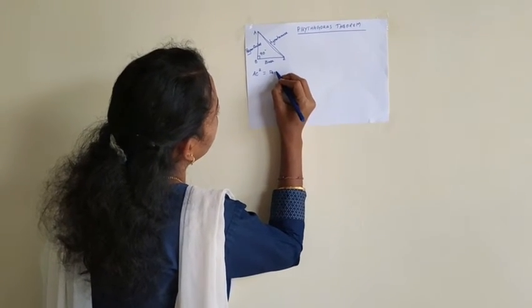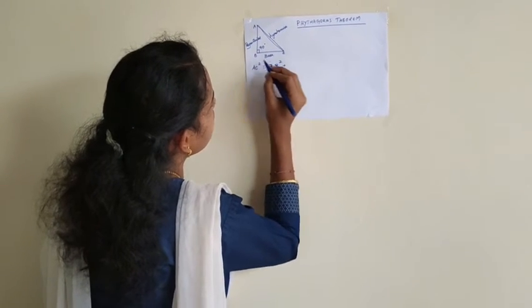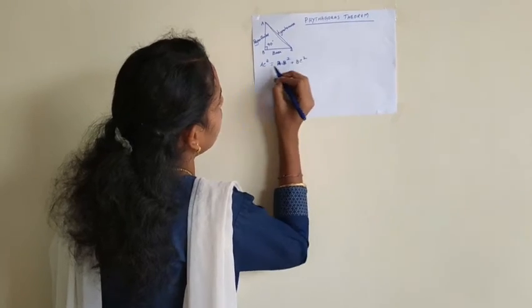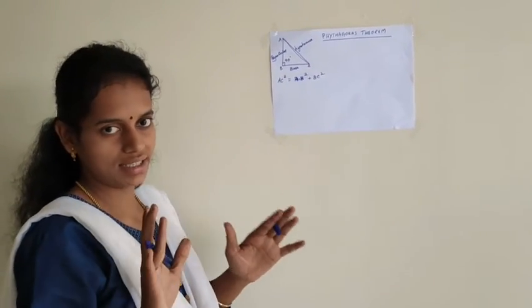So perpendicular, that is AB, AB square plus base BC, BC square. This is what Pythagoras theorem clearly states.